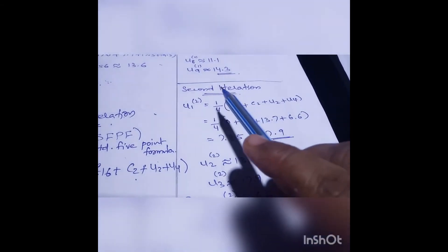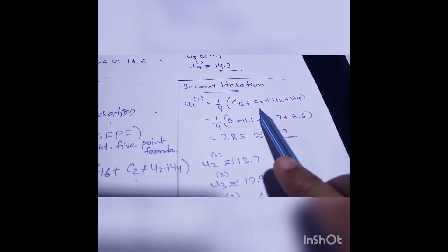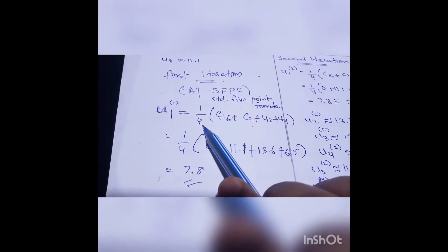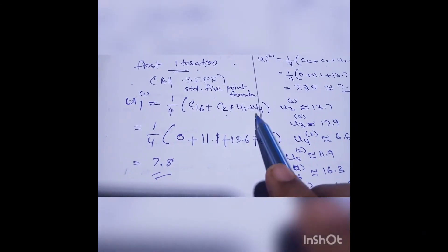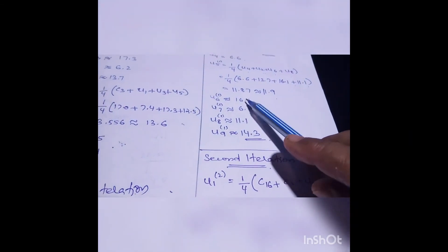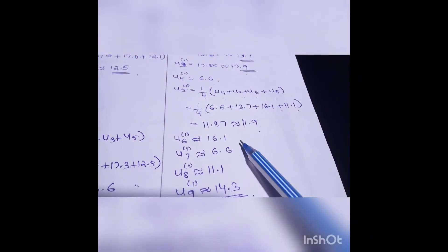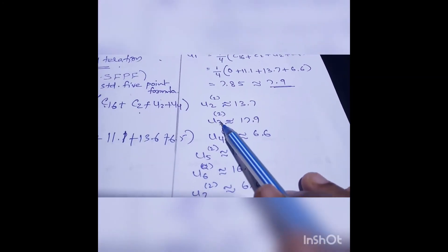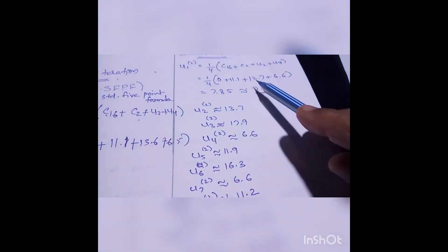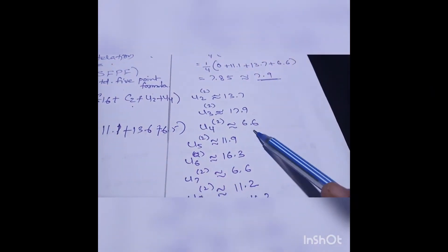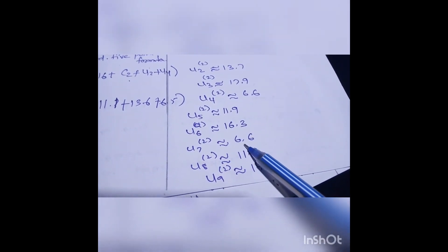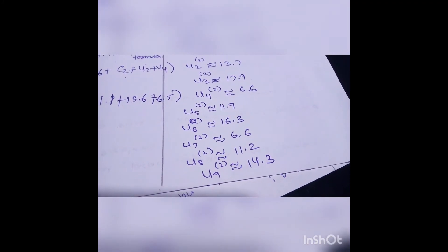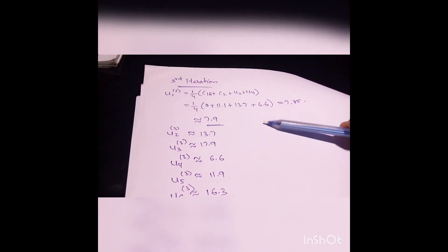Moving to the second iteration with the same formula, C values remain constant while U2 and U4 are taken from the first iteration. Second iteration results: U1 = 7.9, U2 = 13.7, U3 = 17.9, U4 = 6.6, U5 = 11.9, U6 = 16.3, U7 = 6.6, U8 = 11.2, U9 = 14.3. The second iteration values differ slightly from the first.